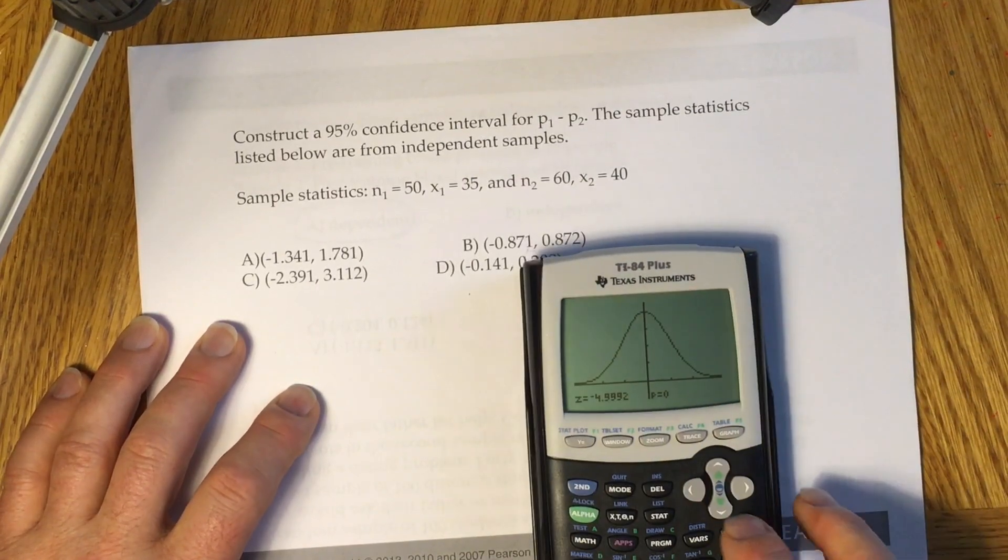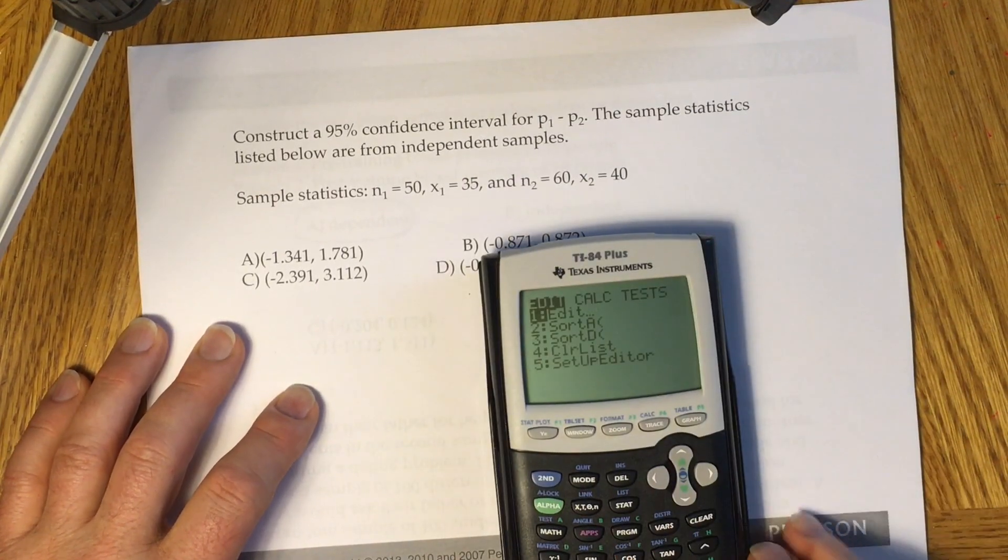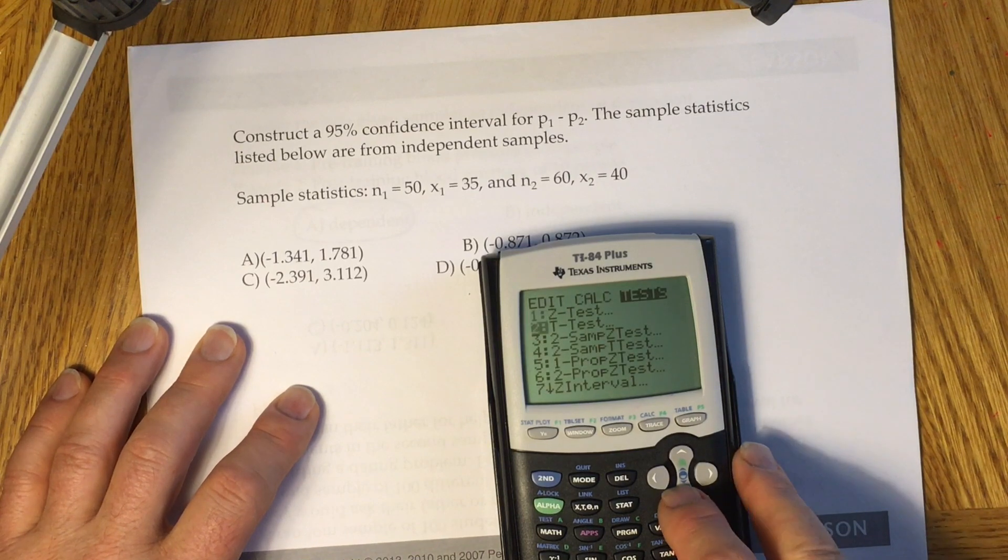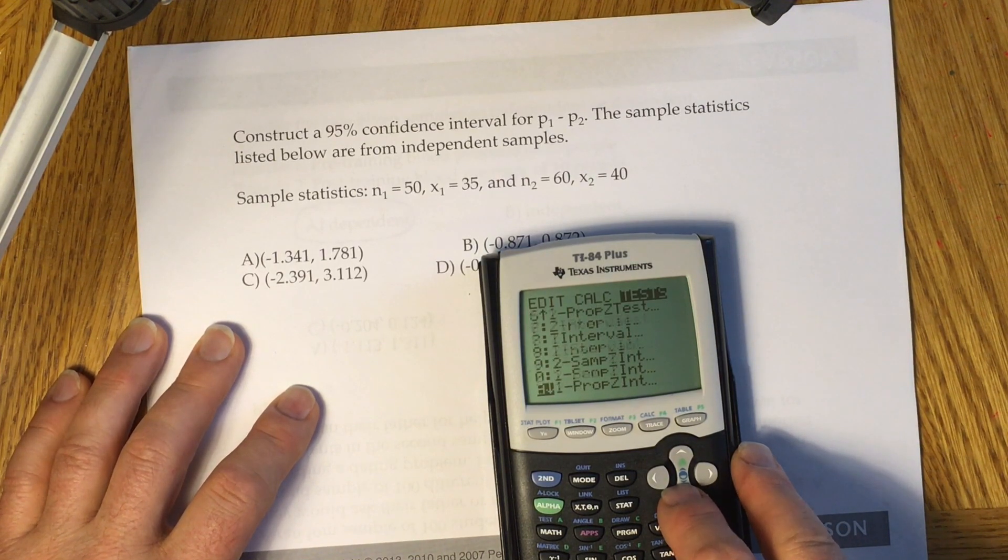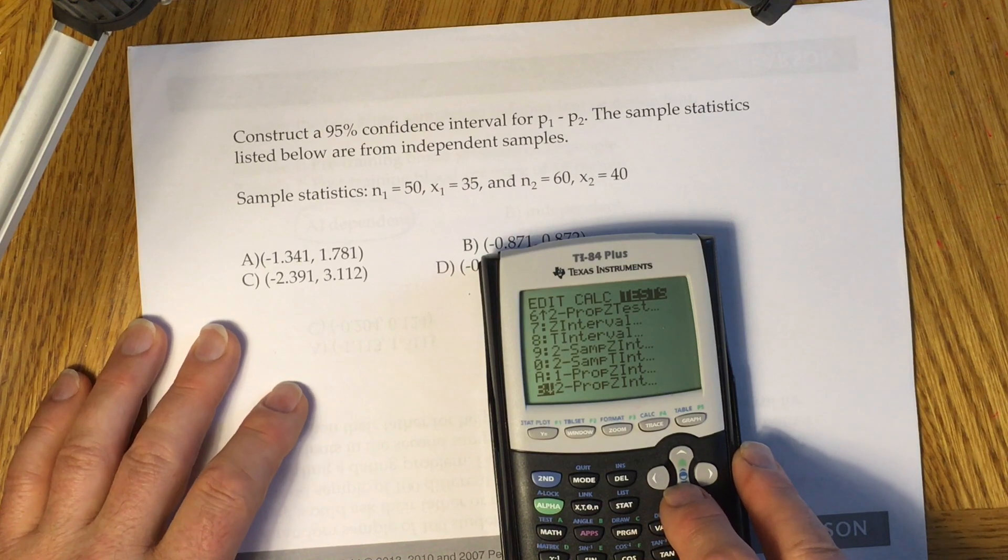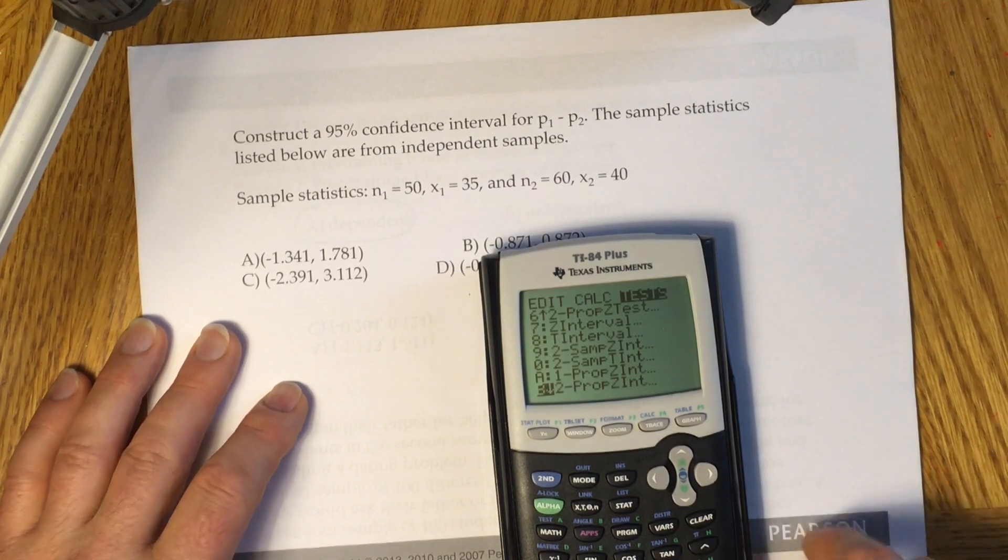Grab your calculator, click the STAT button, go to TESTS, and then scroll down until you see 2-PropZInt. In my case, this is item B on the TI-84 calculator. Highlight this option and click enter.